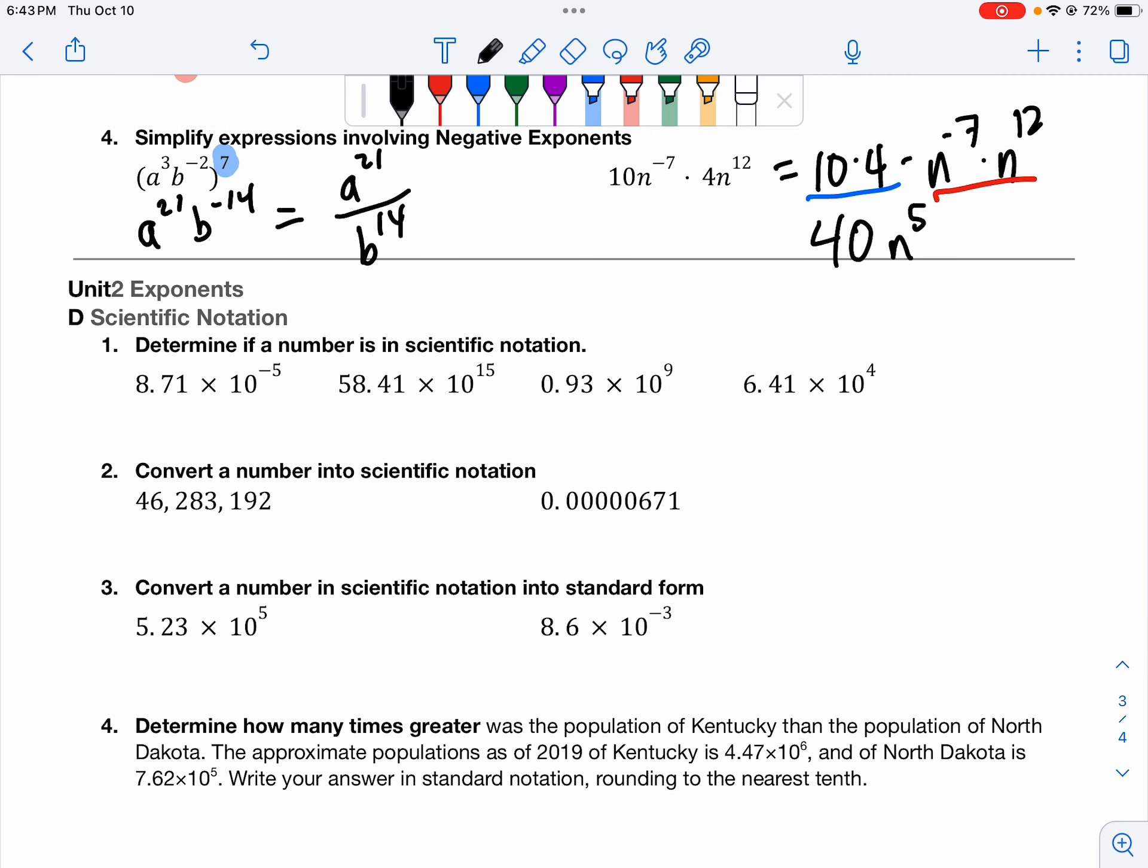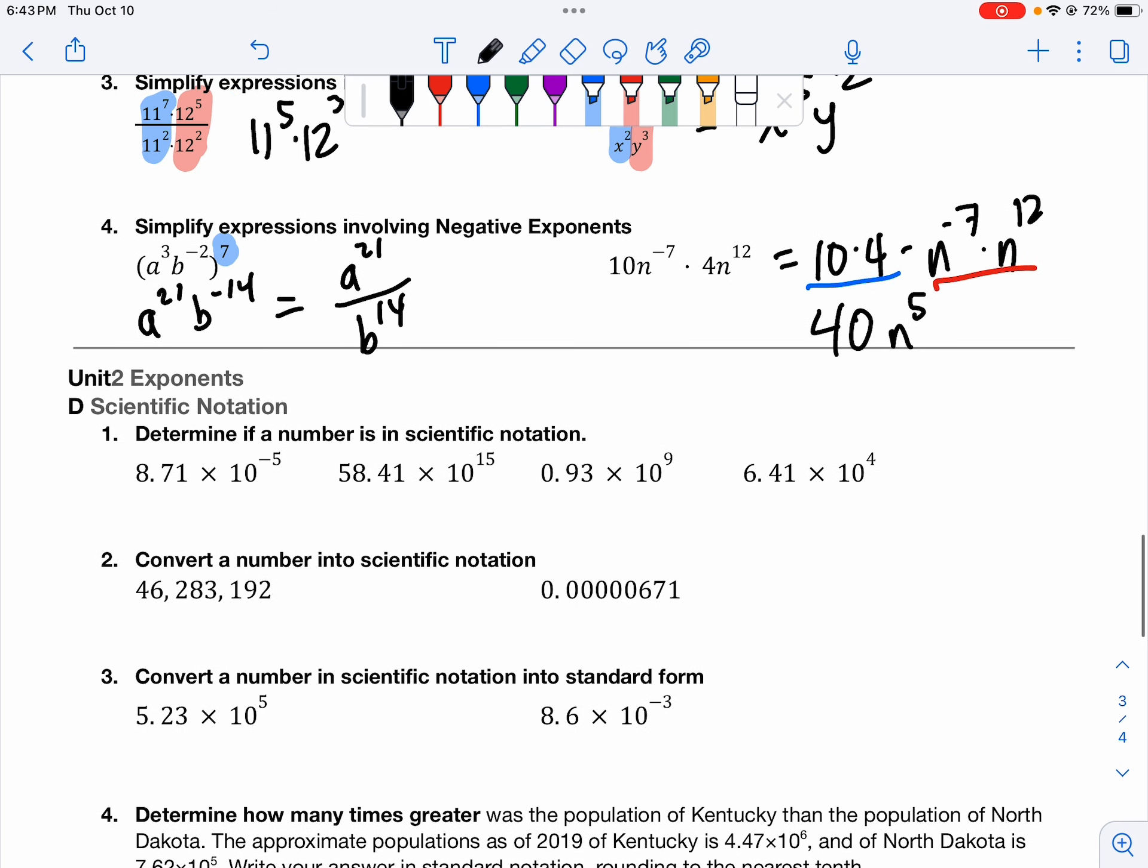Scientific notation. a times 10 to the nth, where a is between 1 and 10. So this says determine if a number is in scientific notation. This one is. Both the 8, the 10, and the negative 5 all work. The second one is not. Why is that? The 58. 58 is not between 1 and 10. Same with the next one. 0.93 is less than 1. So this one doesn't work. And then the last one, 6.4. That's between 1 and 10 times 10 to the 4th. So that works.